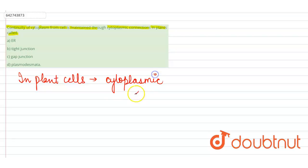Cytoplasmic bridges are present between two cells. These bridges are known as plasmodesmata.